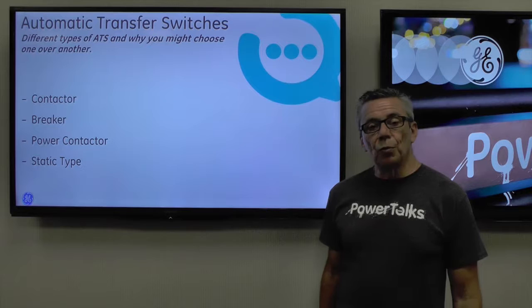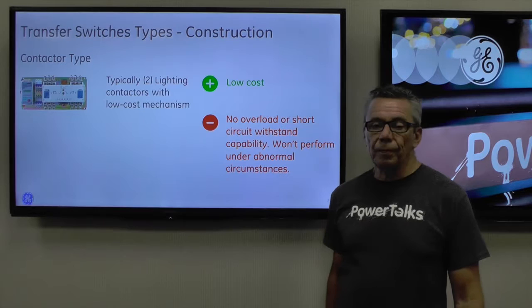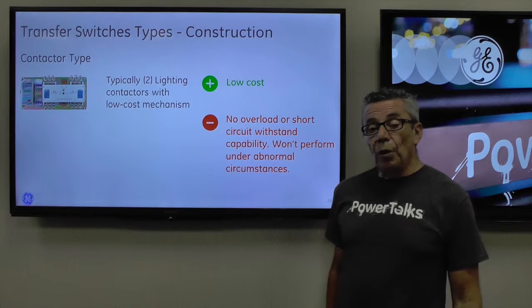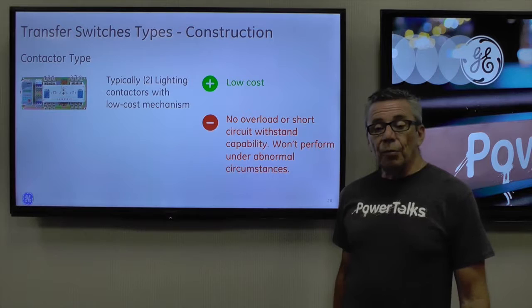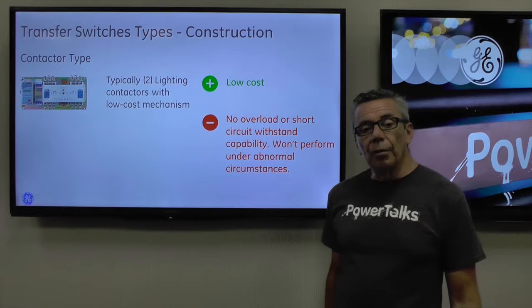We'll look at the contactor type, breaker type, a power contactor, and a static type of automatic transfer switch. In the contactor type we typically see two lighting type contactors — this is a low-cost mechanism. Unfortunately it doesn't provide any overload or short circuit withstand capability, and it won't perform very well under abnormal circumstances, but it will transfer loads from one side to another.